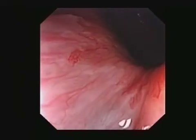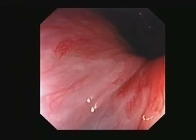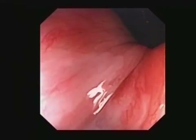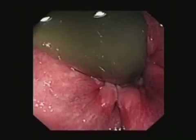First squamous epithelium, then the junction, and inside that the columnar epithelium of the rectum. Retroverting the endoscope, the same thing can be seen.